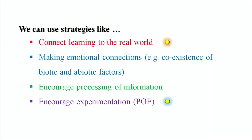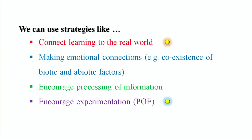When we work with inquiry processes, we can use a variety of strategies. Strategies that connect learning to the real world — whether in the classroom or outside, we have to connect learning to the real world because that is where we live. The second strategy is making emotional connections. For example, co-existence between biotic and abiotic factors. We are biotic because we are living, and the abiotic factors around us include water, air, and soil. How do biotic and abiotic factors live in harmony? That makes an emotional connection and teaches us to respect our environment.